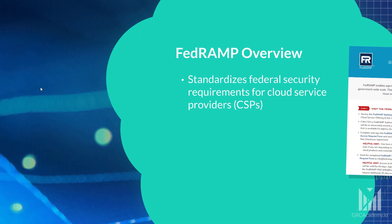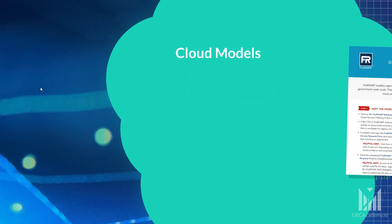When I say CSP, think about the traditional cloud computing models, which are Infrastructure as a Service, Platform as a Service, and Software as a Service. Here are some examples. Infrastructure as a Service includes AWS, Azure, and Google Cloud.